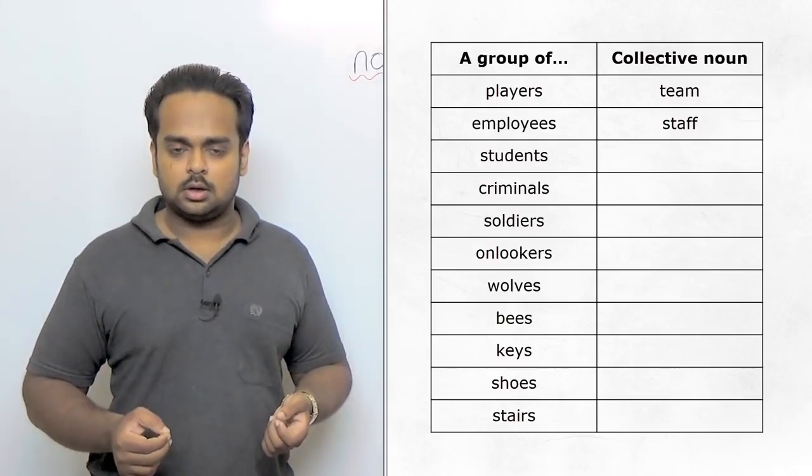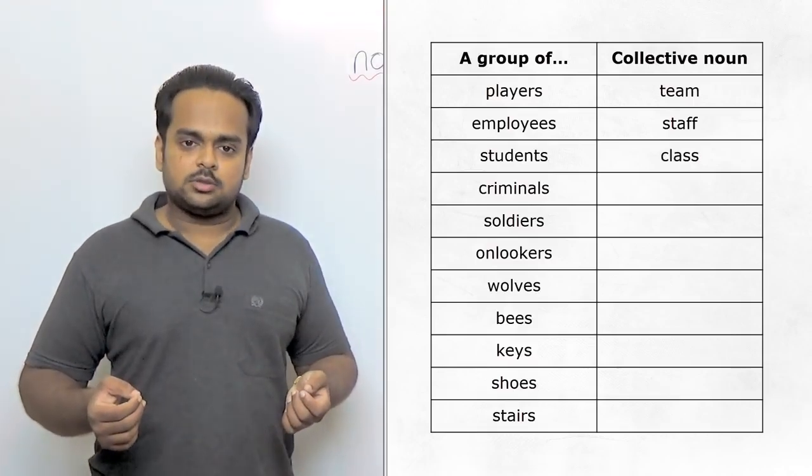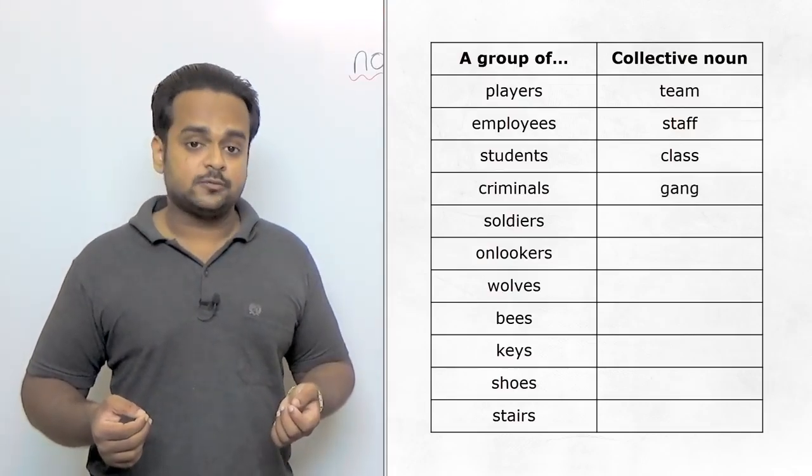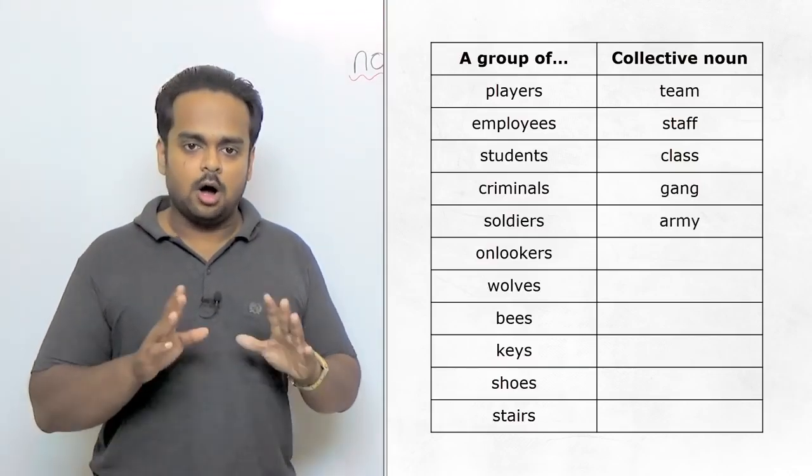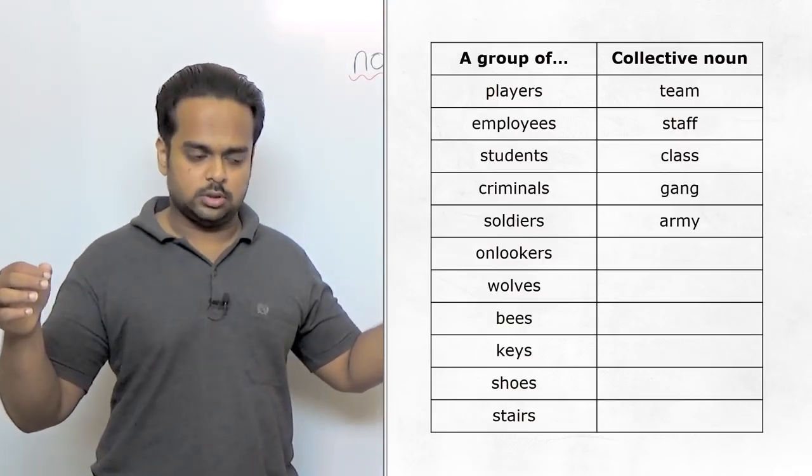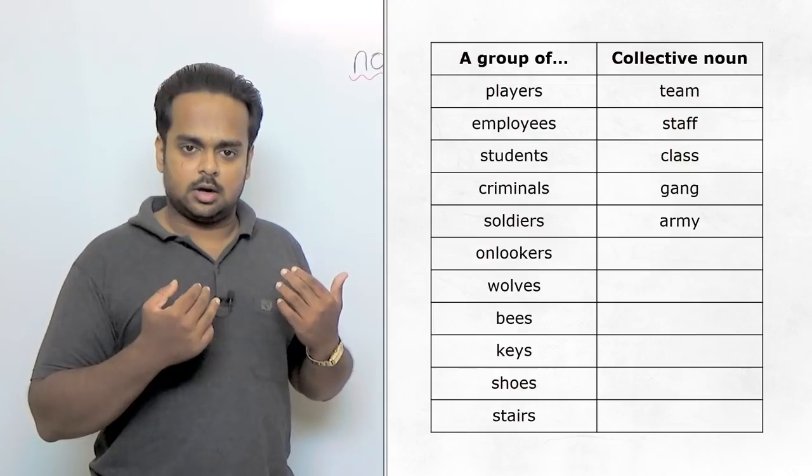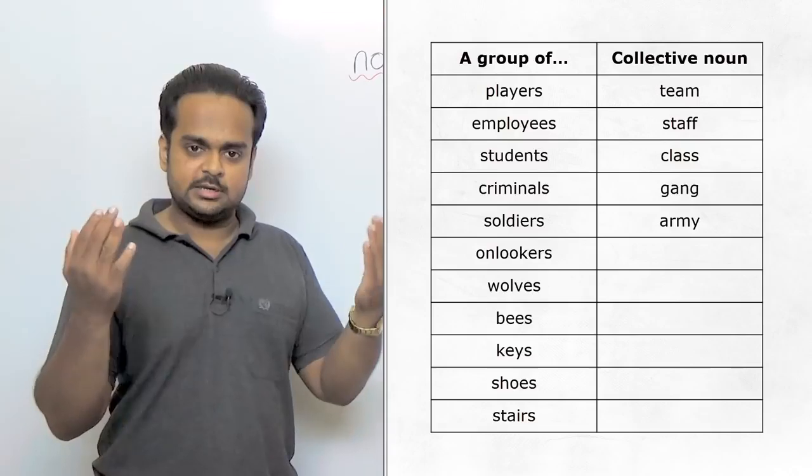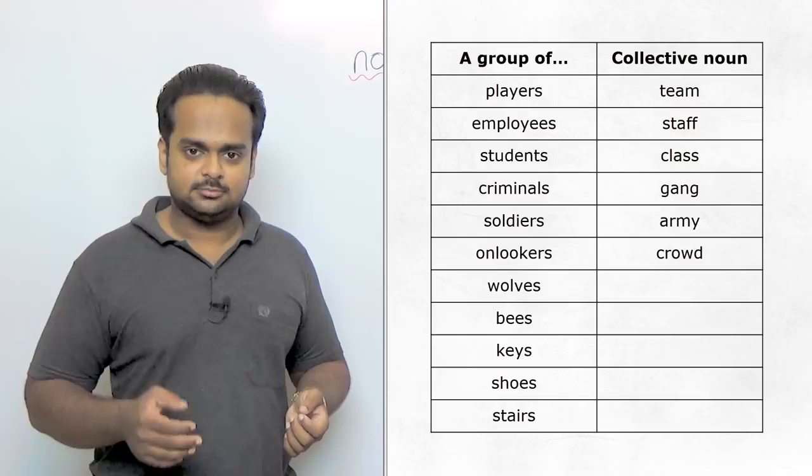What do we call a group of students? A group of students is a class. What about a group of criminals? A gang. A group of soldiers is an army. What about a group of onlookers? Onlookers means, let's say there's been an accident on the road, like there's been a car crash. Onlookers are the people that stand around the scene and they want to see what's happening. So what do you call a group of onlookers? We call them a crowd.